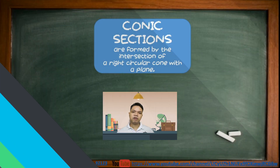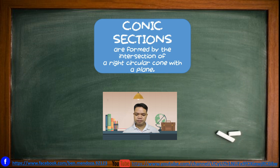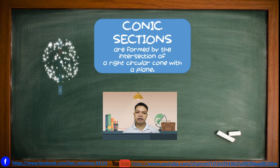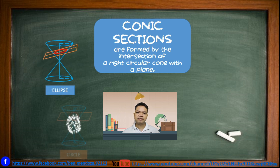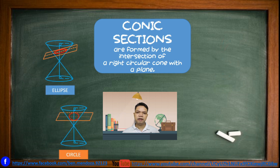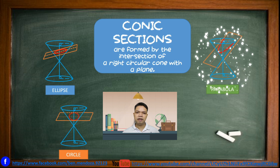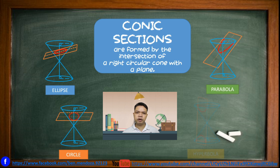What is a conic section? Conic sections are formed by the intersection of a right circular cone with a plane. A conic section may be an ellipse, a circle, a parabola, or a hyperbola.